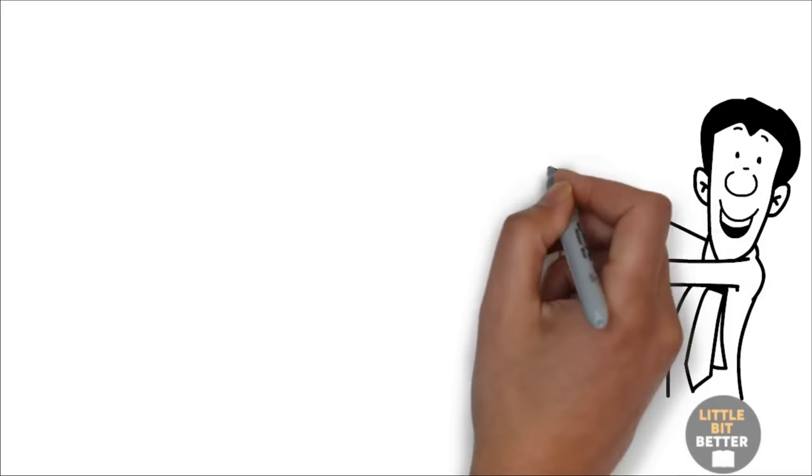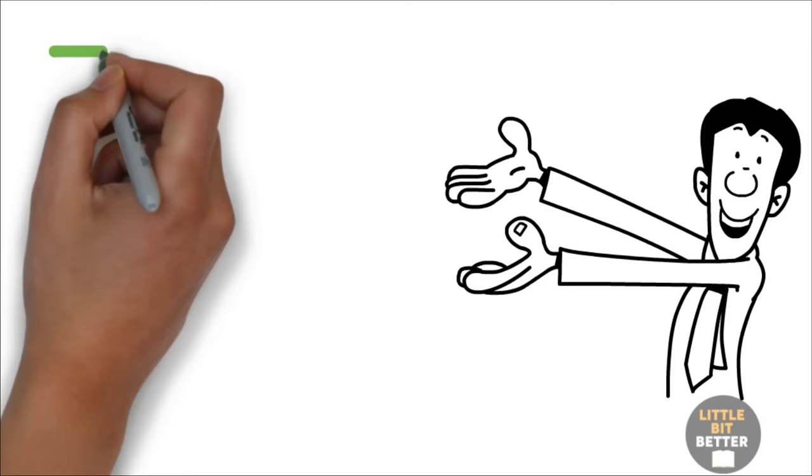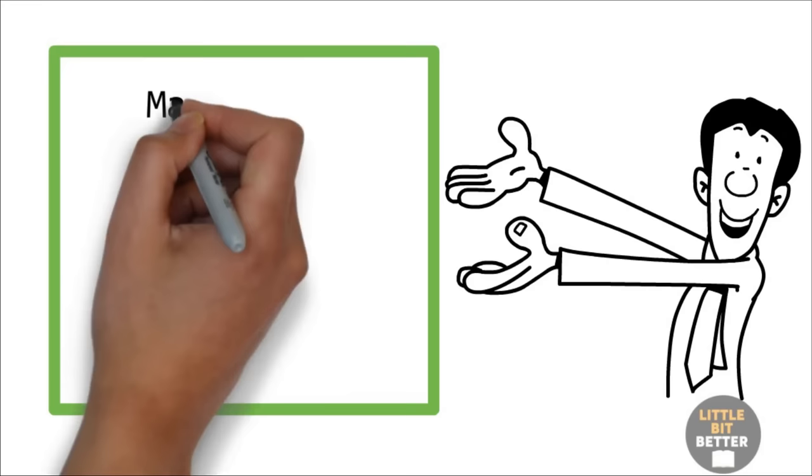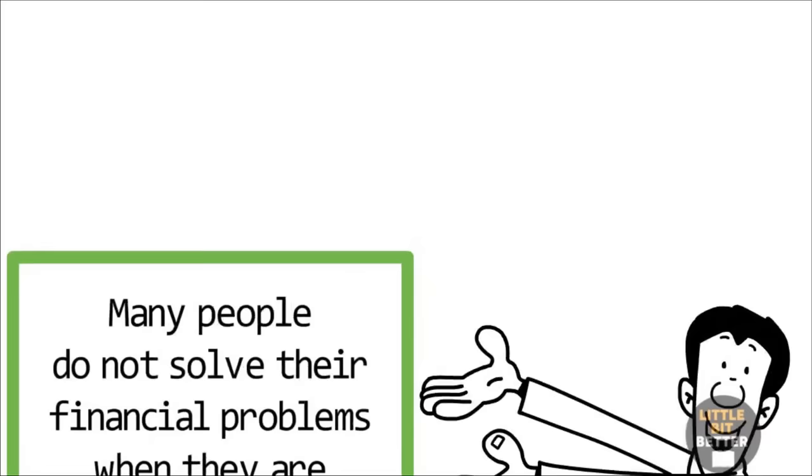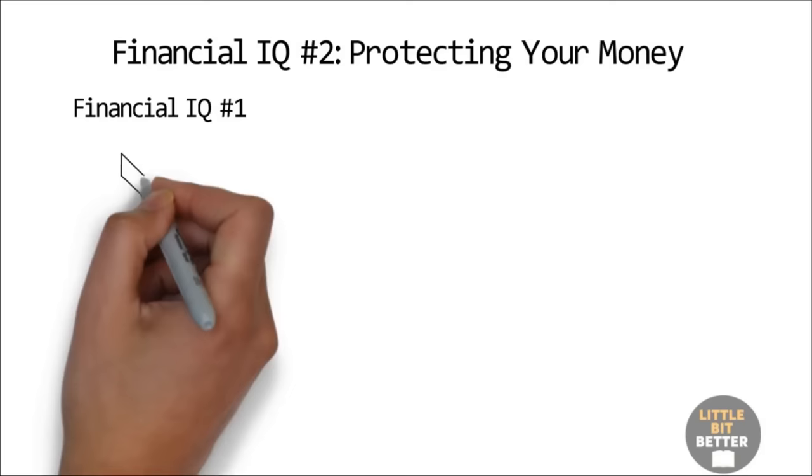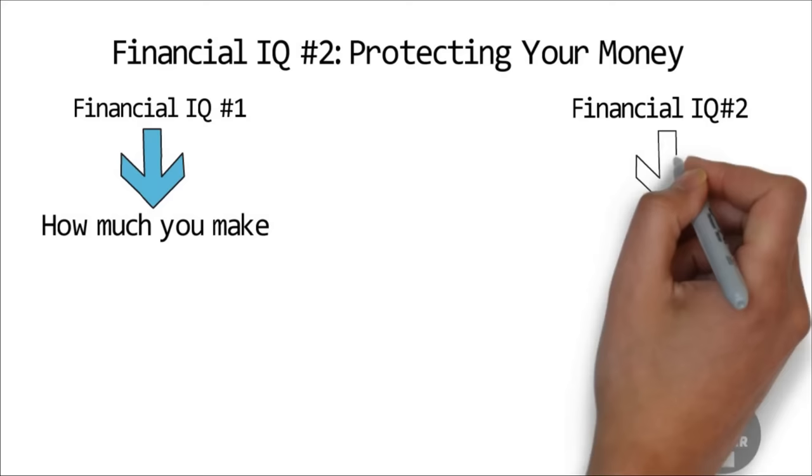This might be an extreme example, but Kiyosaki says that this story stayed with him. I realized at a young age the importance of solving problems and the domino effect caused from not solving a problem. Many people do not solve their financial problems when they are small and at the toothache stage. Financial IQ number two. Protecting your money. Financial IQ number one is measured by how much you make, whereas financial IQ number two is measured by how much you keep to yourself.